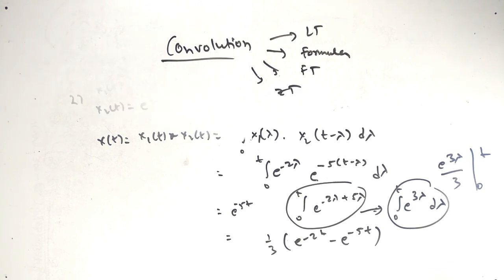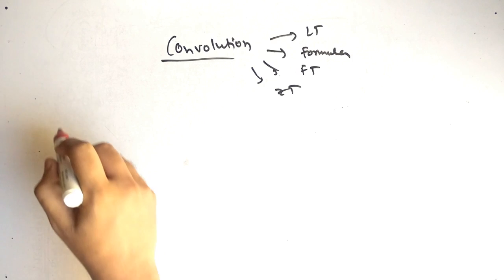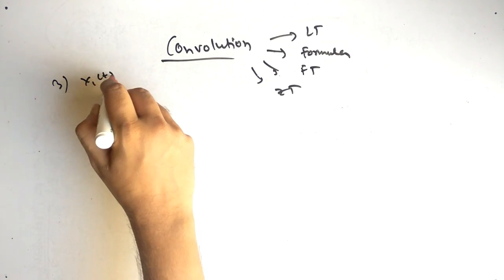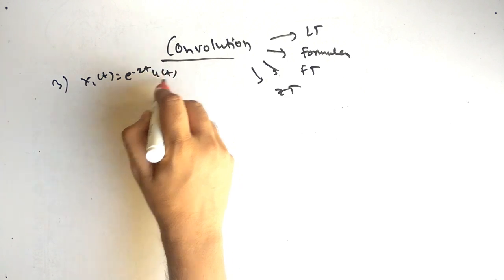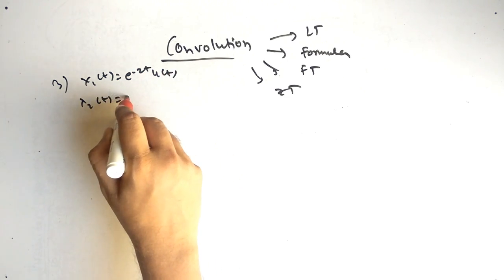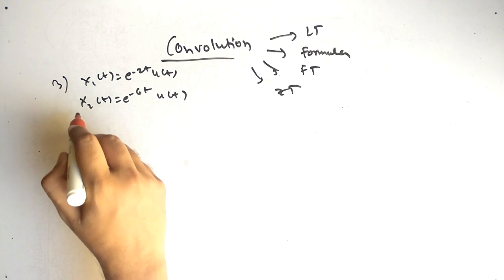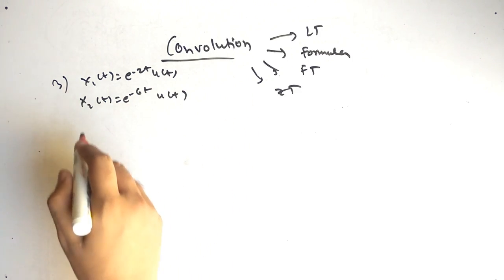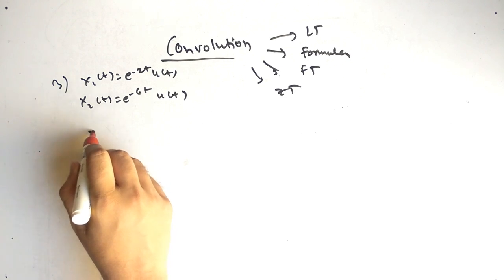Now let's solve a similar problem using Fourier transform. We have x1 of t equal to e raised to minus 2t times u of t, and x2 of t equal to e raised to minus 6t times u of t, and we have to find the output.